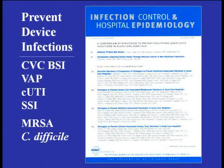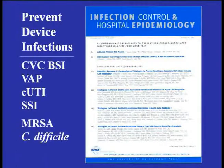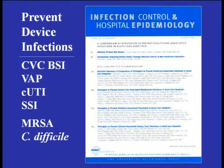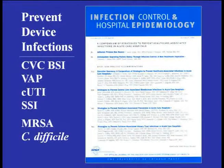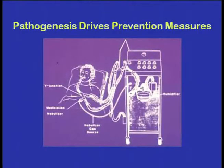In intensive care units, the problems are primarily device-related infections. A compendium published about a year and a half ago covers vascular catheters, ventilator-associated pneumonia, catheter-associated UTI, surgical site infections, and two particularly problematic pathogens: MRSA and C. difficile. These are the ones for which we have the best evidence about prevention, and the ones most queried on tests.